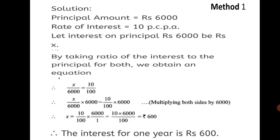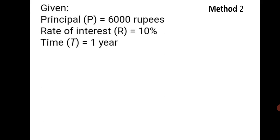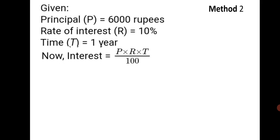This way we have solved the sum using Method 1, which is the ratio method given in the textbook. The second method uses a formula for finding interest. In this method, you write P equals 6000 rupees, R equals 10%, T equals 1 year. The formula is: Interest equals P into R into T upon 100. You will be using this formula even in higher classes, so memorize it.